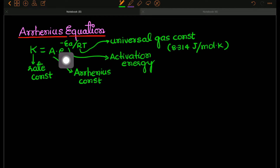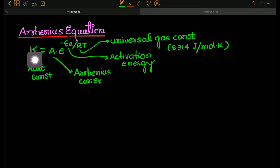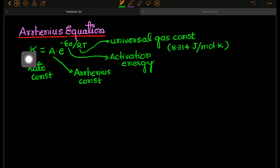So basically this is the Arrhenius equation. K is very small when the activation energy is very large — if the activation energy is very large, then the rate constant will be very small, or the rate of the reaction will be very slow.